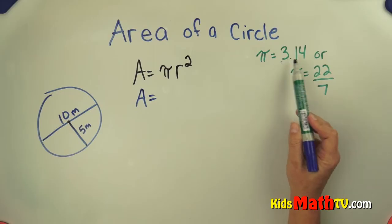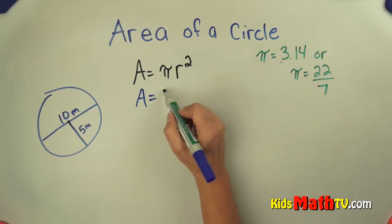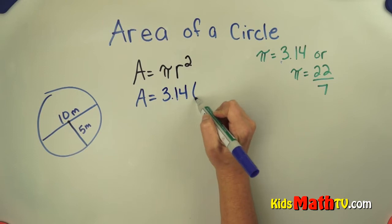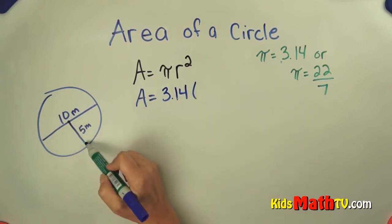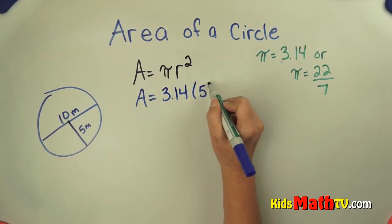I'm going to go ahead and use the decimal 3.14, substitute 3.14 times the radius, making sure I use the radius 5 squared.